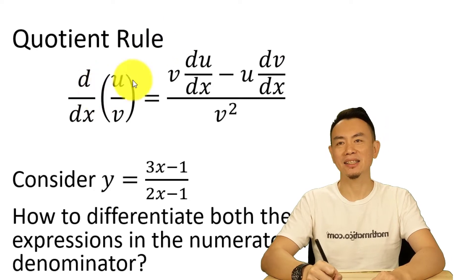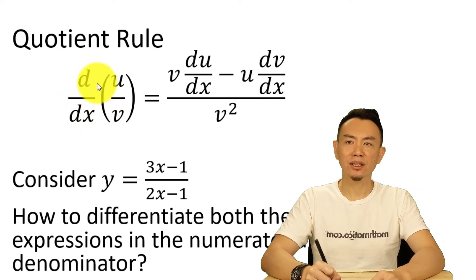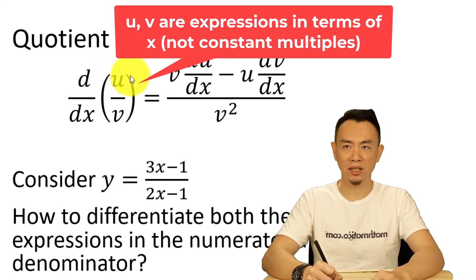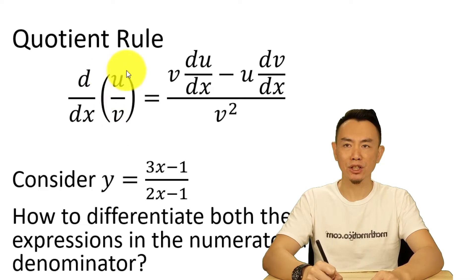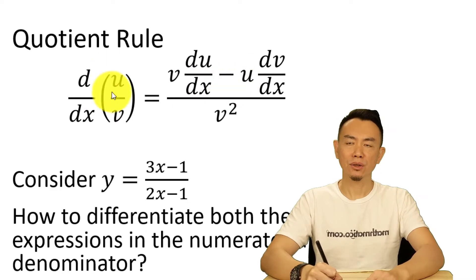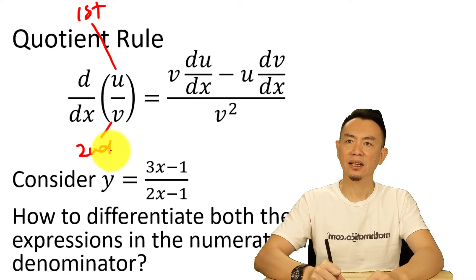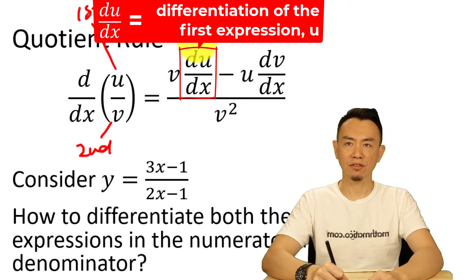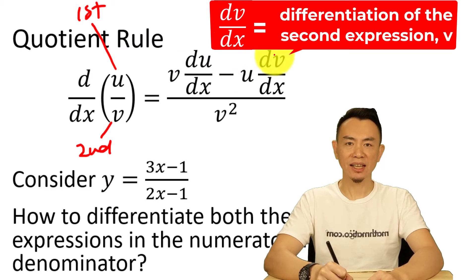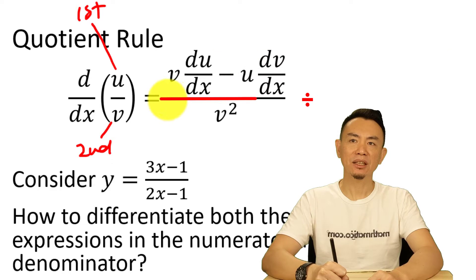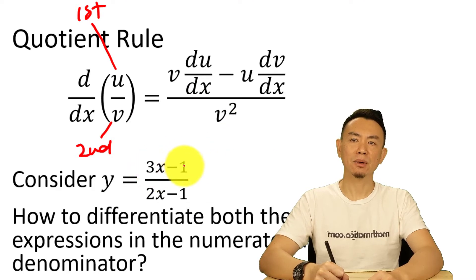So this is the formula for quotient rule. It looks pretty complicated but it's not too bad, and especially if you have learned about product rule, you know it's actually pretty similar. The idea is: if you are going to differentiate u divided by v, where u and v are expressions in terms of x — these two expressions are in a division relationship — you differentiate the first, du/dx, times the second, minus differentiate the second, dv/dx, times the first. Then we divide all this by the square of the second expression, v squared.